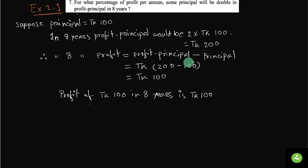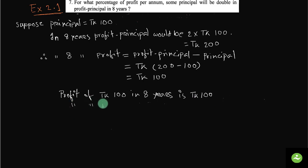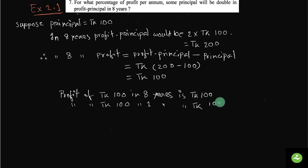Profit equals profit principal minus principal, which is Taka 200 minus Taka 100, equals Taka 100. So the profit of Taka 100 in 8 years is Taka 100. Therefore, the profit of Taka 100 in one year — which is the percentage of profit — is Taka 100 divided by 8.